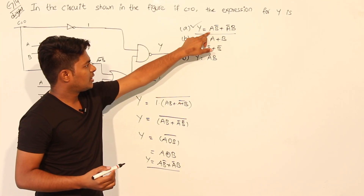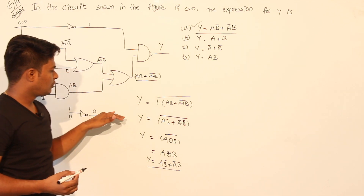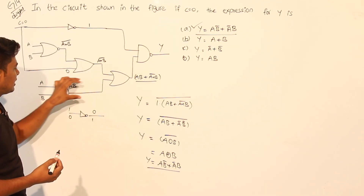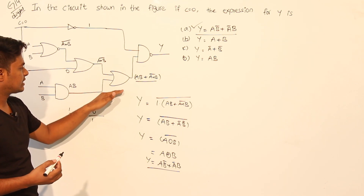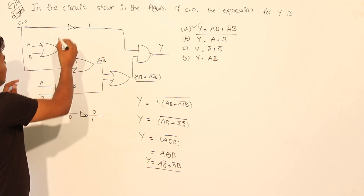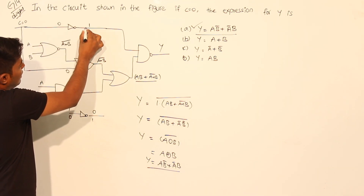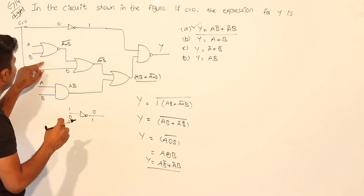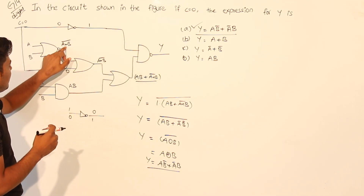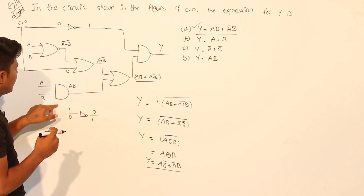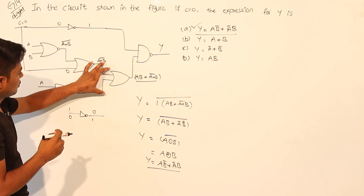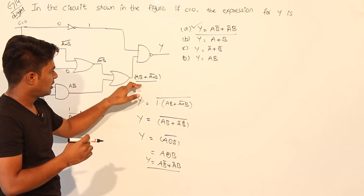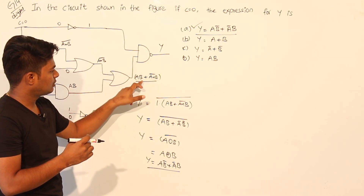So we have found that Y equals AB bar + A bar B. The solution approach was to look at each gate and move to the next: for the inverter, input 0 becomes output 1, which goes to the NAND gate. The NOR gate gives (A + B) bar, the AND gate gives A dot B, the OR gate sums them, and the NAND gate with input 1 gives the final result.